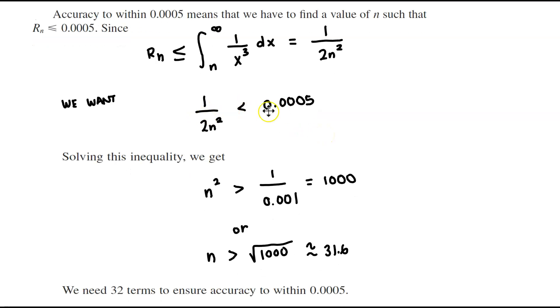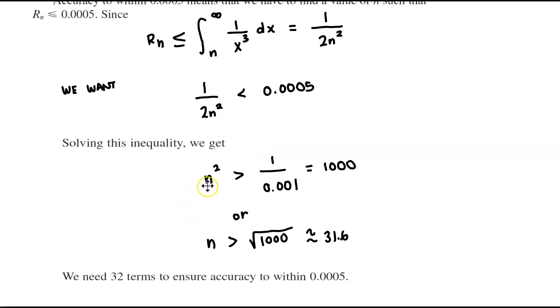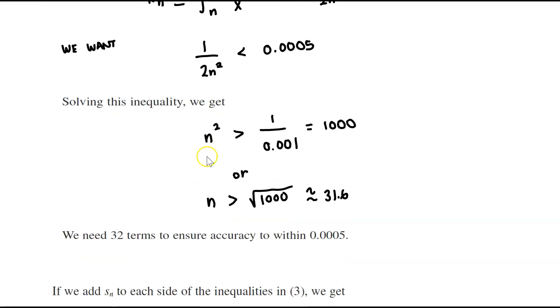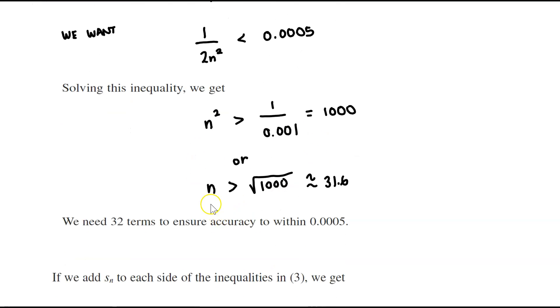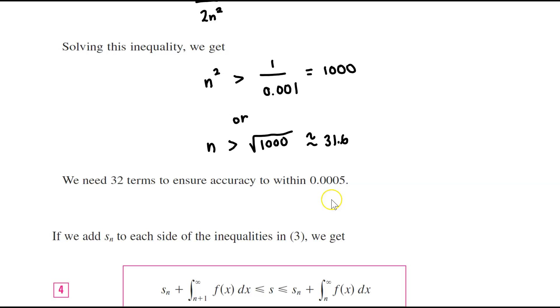And we want to be able to solve this inequality. Now solving this inequality we get n squared which is greater than 1 over 0.001 which equals 1,000. Or if we take the square root of both sides then n would be greater than the square root of 1,000 which is approximately 31.6. So we would need 32 terms to ensure accuracy to within 0.0005.